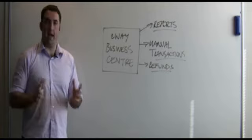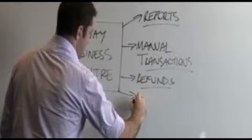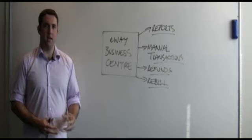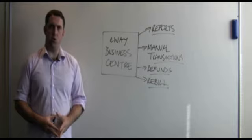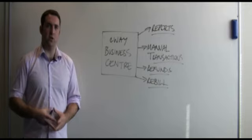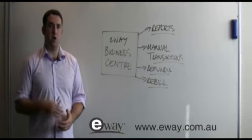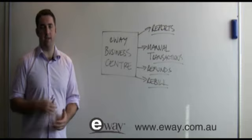Another important feature in the eWAY Business Centre is recurring billing, or what we call re-bill. The re-bill system is perfect for merchants processing memberships or subscription payments — anything where you need your customers to pay you over a period of time. We control the payment schedule so every time a payment is waiting to be processed we do that automatically, saving you the time and hassle of processing it manually. All the details are stored securely within the eWAY Business Centre so you don't have to store those credit card details yourself.